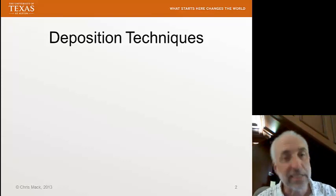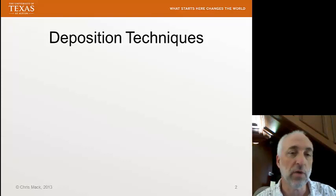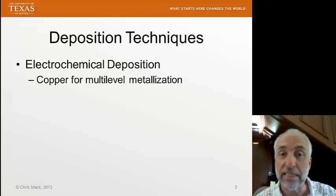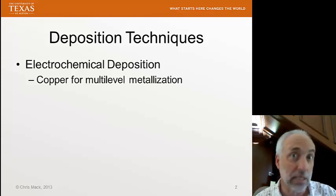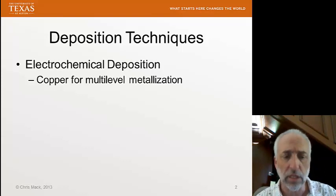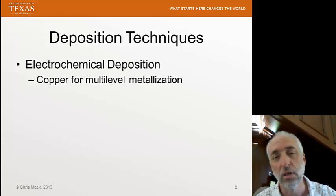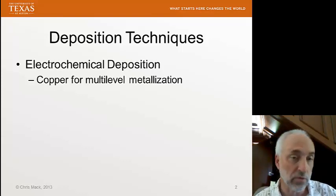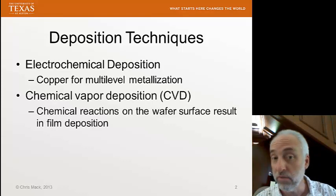There are many different techniques for depositing different kinds of films on a semiconductor wafer, and we're going to talk about all of them eventually in this class. One technique is electrochemical deposition. This is the technique we use for depositing copper on the wafers, and copper is used as the metalization of choice in more advanced integrated circuits. Originally, aluminum was the most common metalization material, but since the mid to late 90s, we've switched to copper because of its lower resistivity.